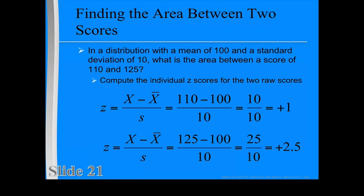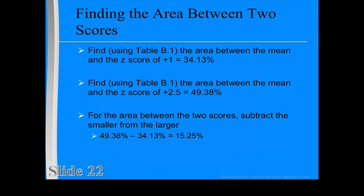When your z-score doesn't happen to fall right on a whole number like one or negative two, then you have to rely on the table to calculate the differences between the two scores. Doing so just requires you to go back to table B.1 and follow a simple three-step process, which is actually just adding and subtracting.